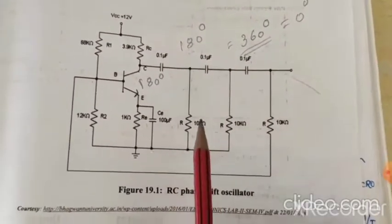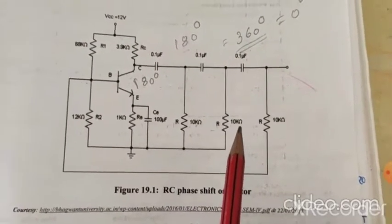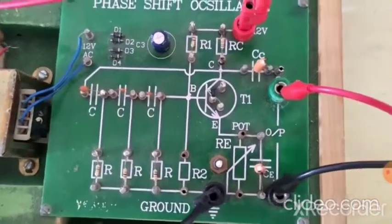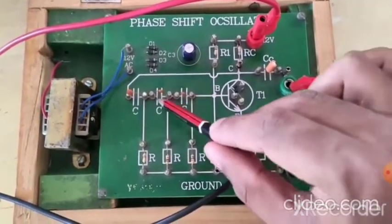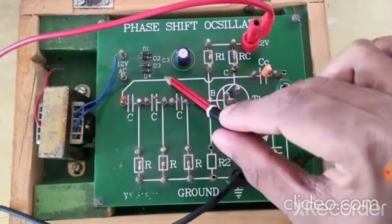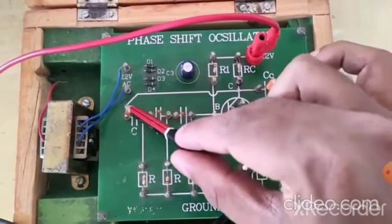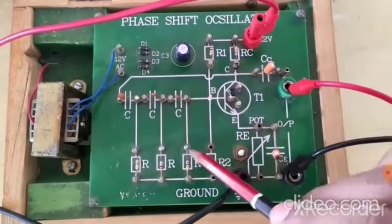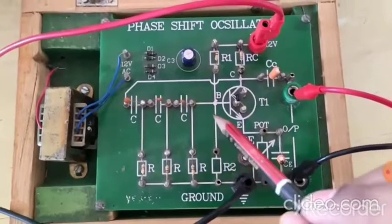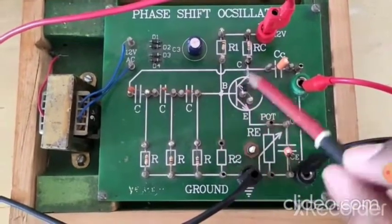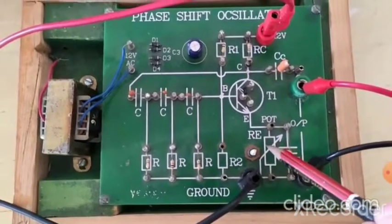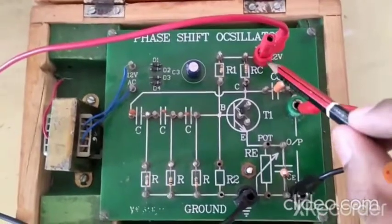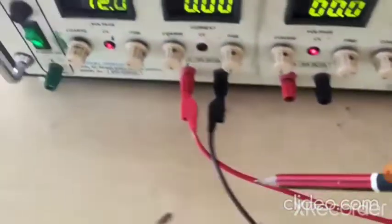The resistors are 10 kilo ohm. Now let's move to the practical setup. This is the RC phase shift oscillator trainer kit. No input is applied to this circuit, and there are three sections of RC. Feedback is given from the collector of the transistor. This is the CE amplifier section with R1 and R2, then RC and RE resistors. RE is a variable resistor. This is transistor T1 and coupling capacitor CC. We provide 12 volt VCC supply from the DC power supply.